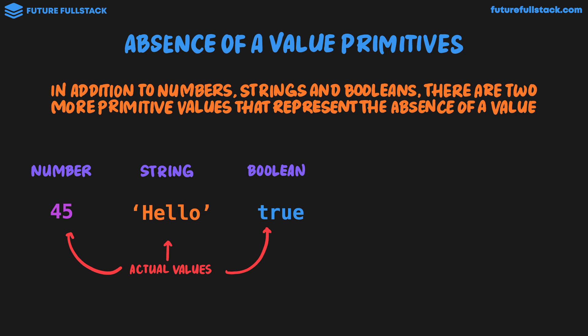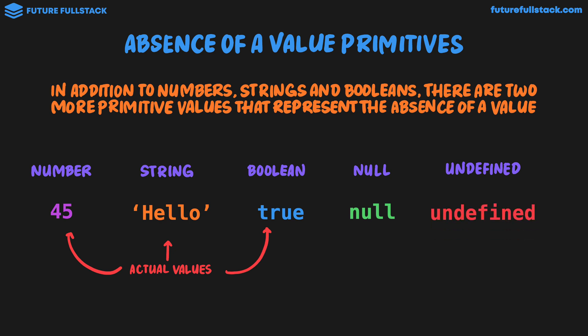We then have these two other kinds of primitive values which represent the absence of a value. They are null — which is just null, n-u-l-l — and undefined. These values are kind of similar to boolean true and false in that they're just a word. Do not confuse these with strings; null and undefined are values themselves, but they represent the absence of a value.